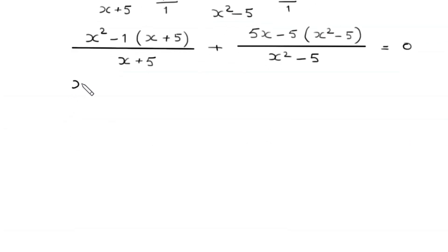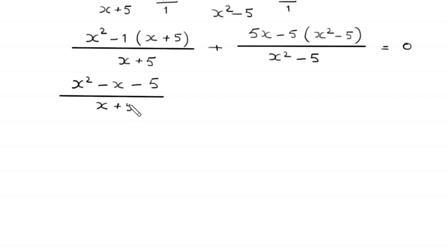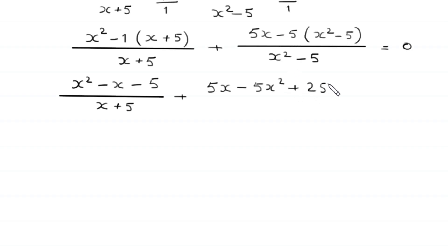Expanding: x squared, then negative 1 times x is negative x, and negative 1 times 5 is negative 5, divided by x plus 5. Plus: 5 times x, negative 5 times x is negative 5x, negative 5 times x squared is negative 5x squared, and negative 5 times negative 5 is plus 25, divided by x squared minus 5, is equal to 0.